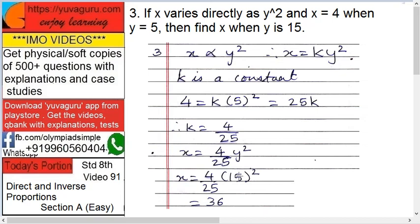9 is 225. So 9 is 36. X equals 36. That is the answer.